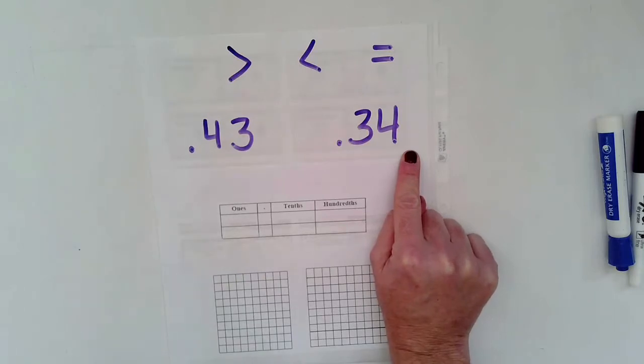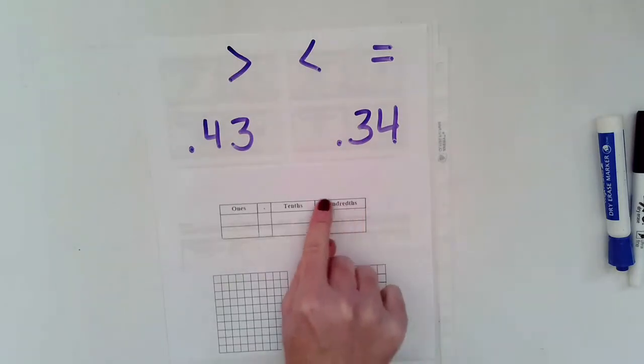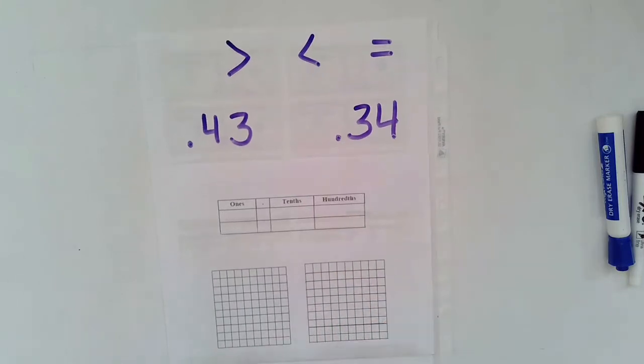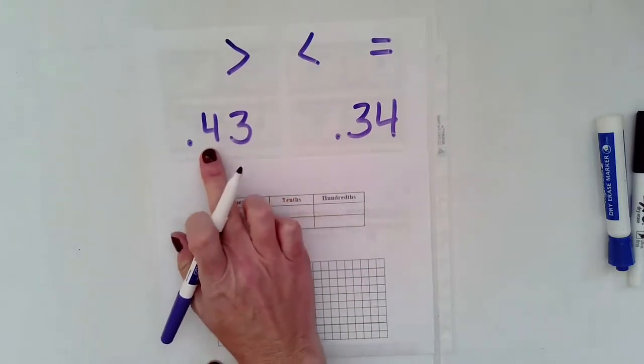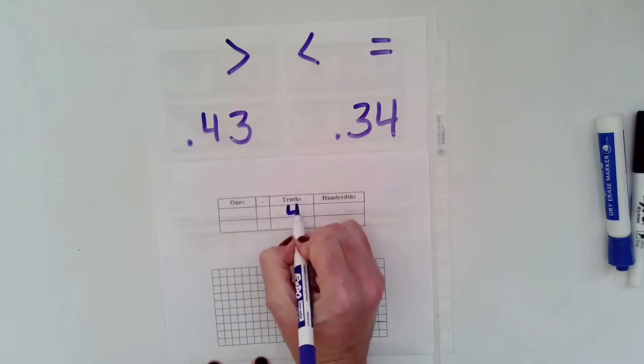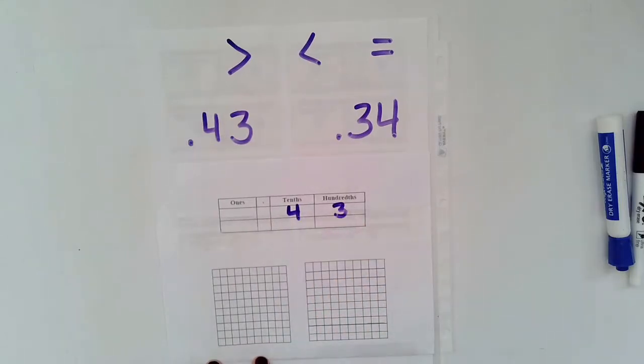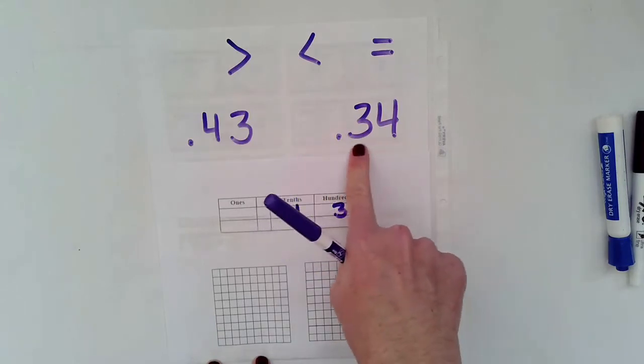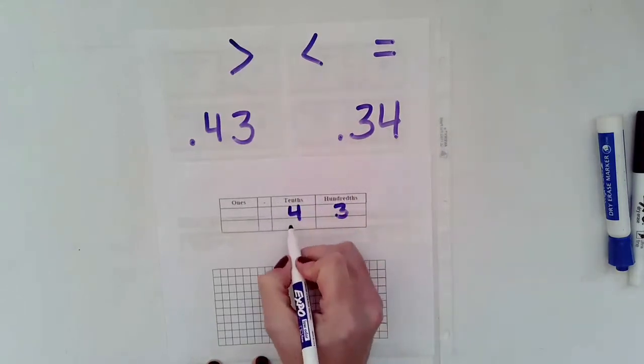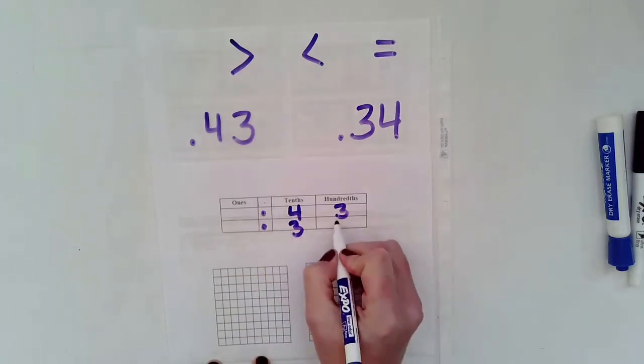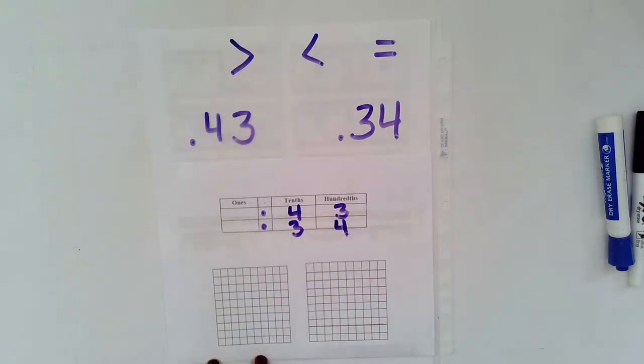So in order to compare these, I'm going to first use a place value chart. So I'm going to take my 43. I know the 4 is in the tenths place and the 3 is in the hundredths place. Then I'm going to look at my 34 hundredths. I know I have a 3 in the tenths place, so I've got to put my decimal point there, and a 4 in the hundredths place.